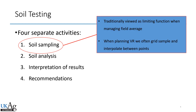In this edition, we're talking just about collecting that soil sample, which is traditionally viewed as the limiting function when managing fields because we're trying to manage towards the average. When you send that sample off to the lab, they're using one teaspoon to come up with a number that represents the whole field. The results and recommendations are only as good as the sample submitted to the lab.